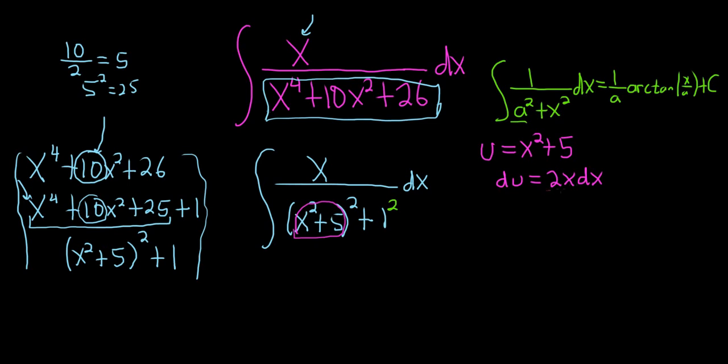And the goal is to make this, the 2x dx, look like what we have in our integral. So we have an x dx in our integral. So let's go ahead and divide both sides by 2. So we can write this as 1 half du equals x dx.